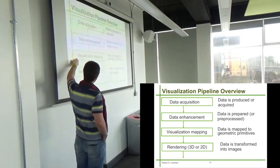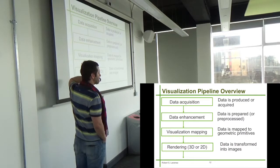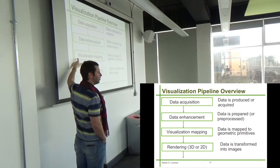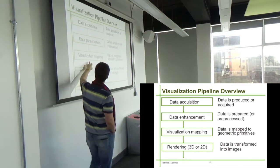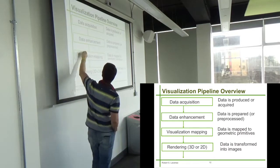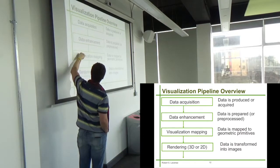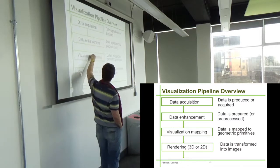Then there's the visualization mapping phase. That's when data is mapped to shapes and colors essentially. This is what this module is about — the focus is this visualization mapping phase, though we do also talk about data enhancement.